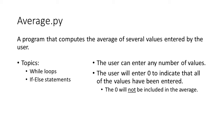The programs that we have created previously have read all of their input, processed it, and then displayed the results. In this program we are going to follow a different model. We will read a value, process it, and then go back and read and process any remaining values. Our program will move on to the output phase when the user enters 0 to indicate there is no further input and that the average should be displayed. The 0 will not be included in the average because it denotes the end of the input — it isn't a value in the dataset that we are processing.